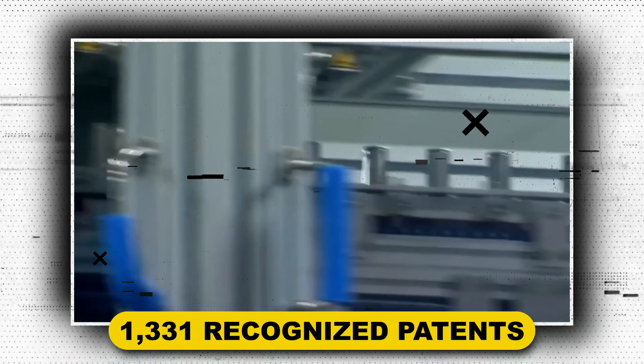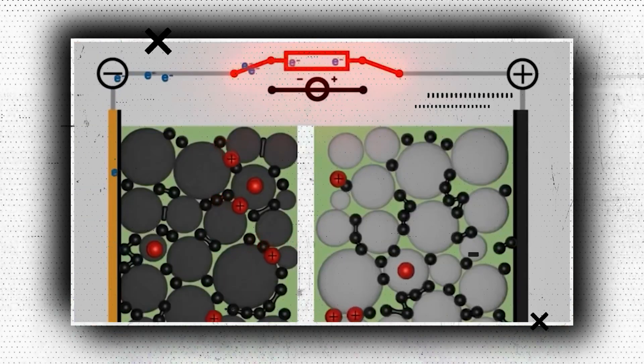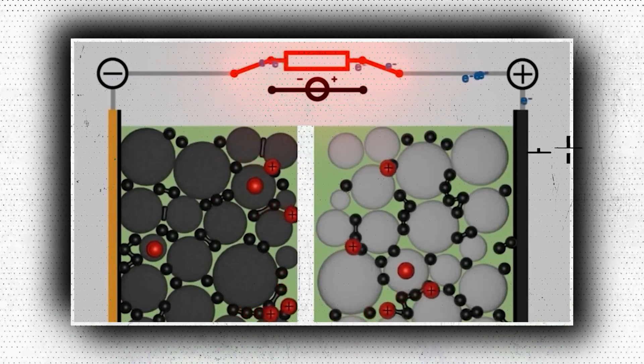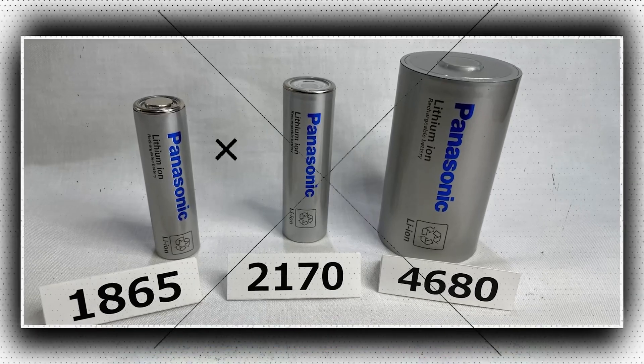With 1,331 recognized patents, the study discovered that Toyota Motor is by far the largest holder of solid-state battery patents. With 445 patents, Panasonic Holdings is a distant second.